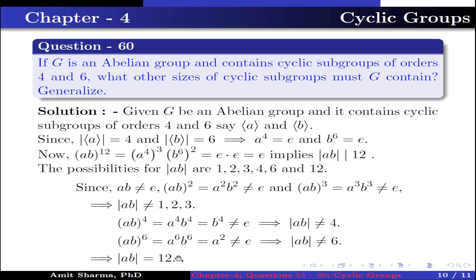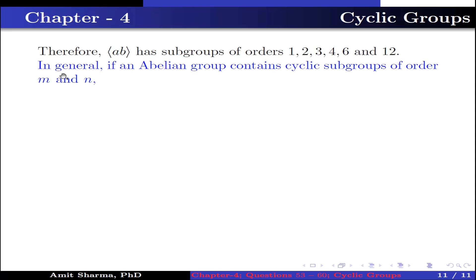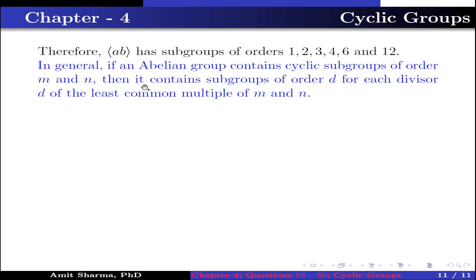Therefore, the order of AB is 12. Thus the group generated by AB has subgroups of order 1, 2, 3, 4, 6, and 12. In general, if an abelian group contains cyclic subgroups of order M and N, then it contains a subgroup of order D for each divisor D of lcm(M, N).